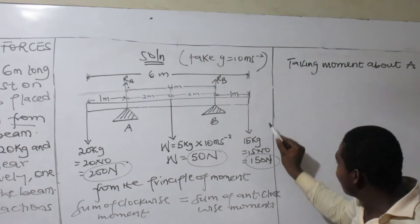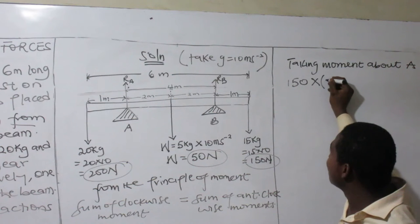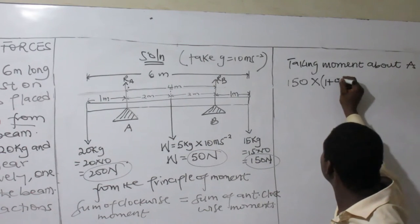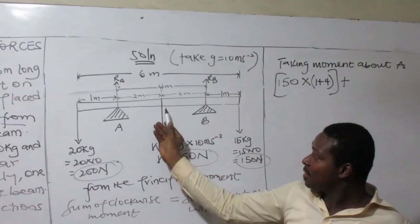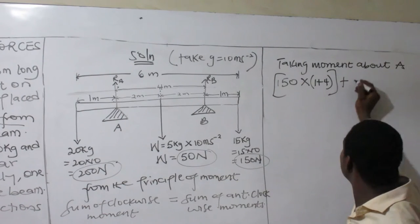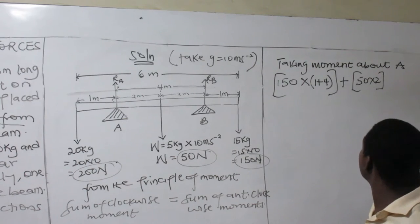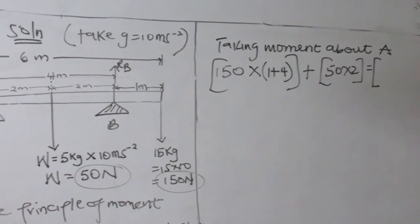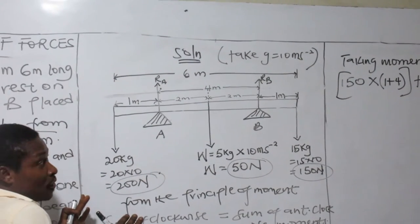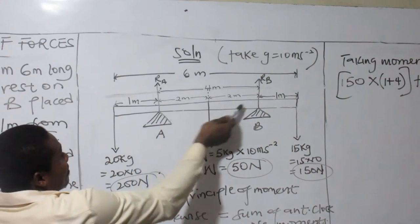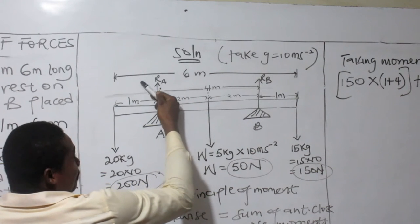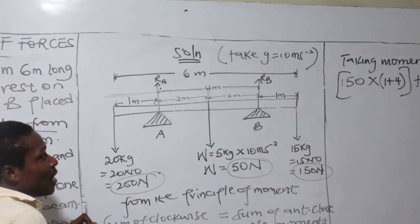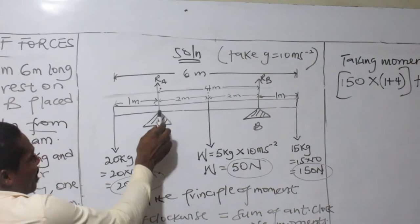So this reaction is my first force: 150 times distance of one plus one plus four — that's the line of action. I meet another force of 50 N and the distance from here to the line of action is just two. Now for anti-clockwise, let's check the anti-clockwise moments, still about A.